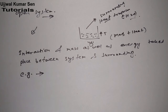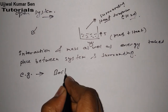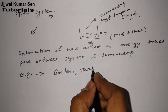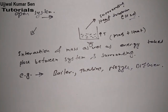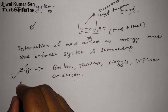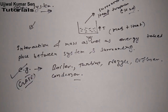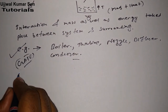Examples of open system include: boiler, turbine, nozzle, diffuser, and condenser. If you are preparing for GATE and SSCJE, the probability of getting questions from examples and applications is much higher. For GATE, about 80 percent of the time you will get numerical problems only. Now let's move on to the next type of system, which is closed system, and again we will learn it practically.